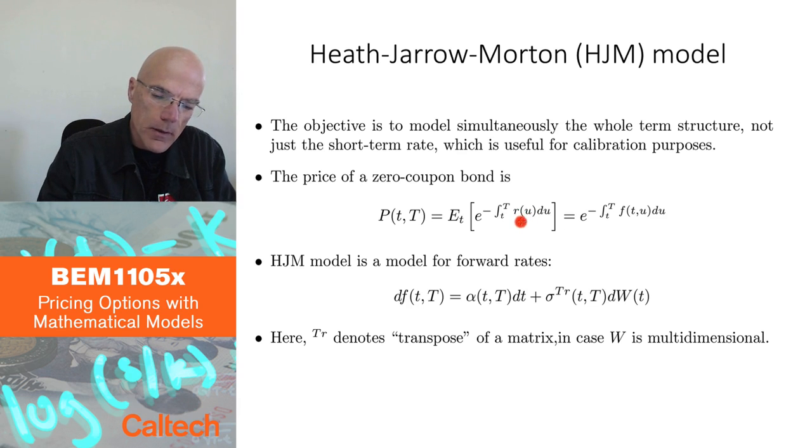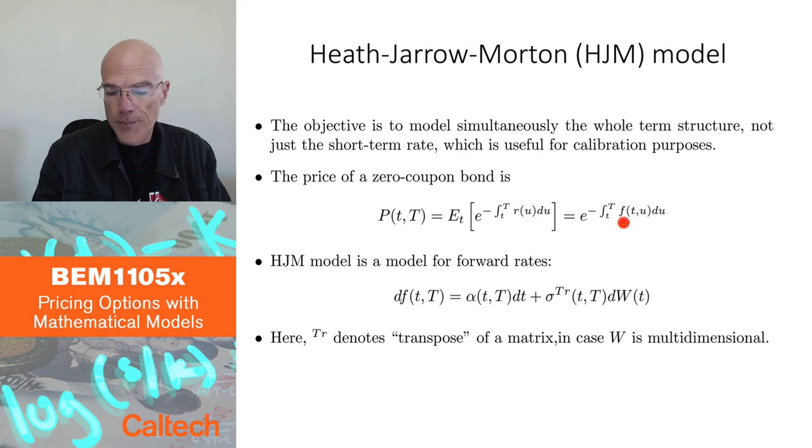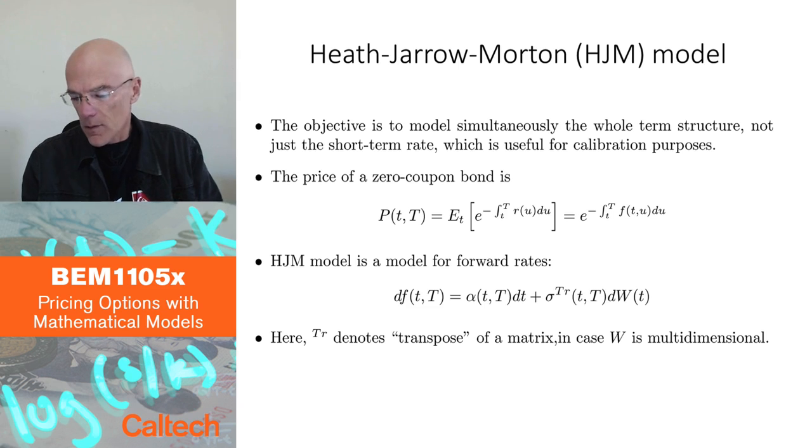Well, I told you that the short rate really is not something which is observable, right? If you know the bond prices, you can't really directly know what the short rate is because there is an expectation operator. So you cannot recover the short rate directly from bond prices. However, you can recover the forward rates directly from the bond prices, at least if you observe bond prices for all maturities, which in practice is not true.